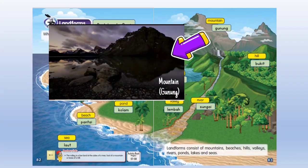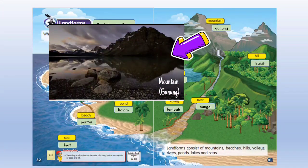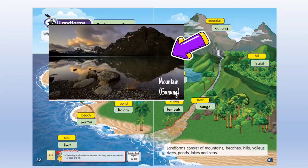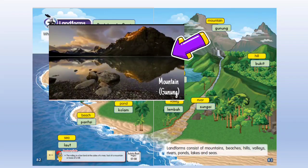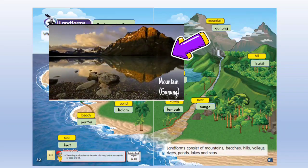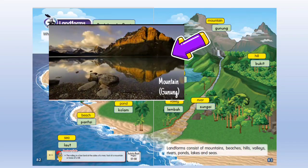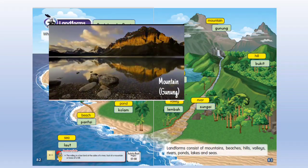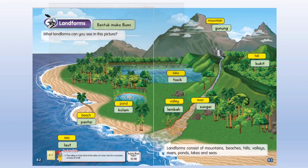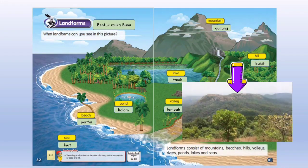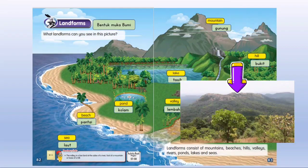This is the mountain — gunung. Usually, a mountain is higher and steeper than a hill. Gunung lebih tinggi dan curam berbanding bukit. This is the hill — bukit.